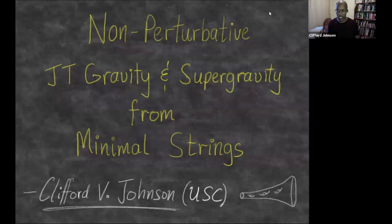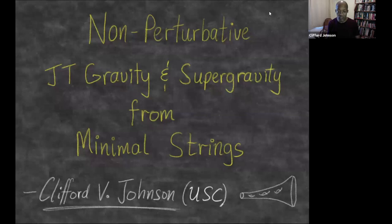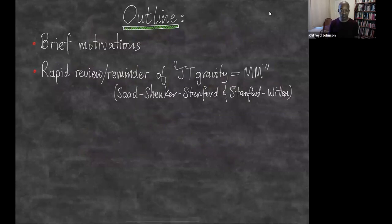There's a sense, which I'll make very precise, in which you can construct JT gravity and supergravity from minimal strings in a particular way — you can extract actual results, it's not just a formal exercise. I think there's a lot to be done. In particular, deformations of these models will simply correspond to changing the recipe of how you put the minimal strings together.